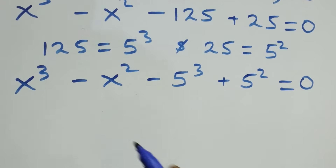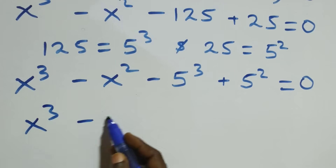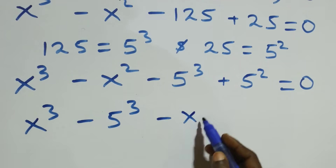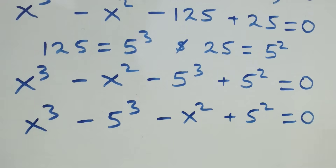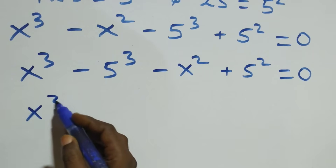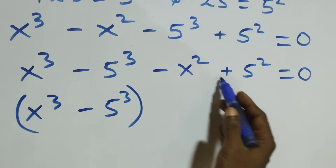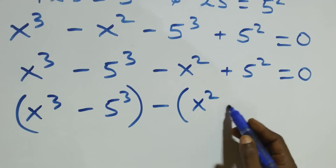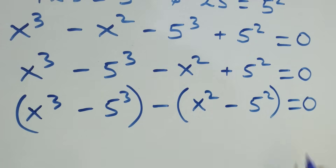The next step: we bring the power of 3 terms together — x cubed minus 5 cubed — and also the power of 2 terms together: minus x squared plus 5 squared, equals to zero. We can write it as (x cubed minus 5 cubed), then minus is common, factored as minus into bracket (x squared minus 5 squared), equals to zero.